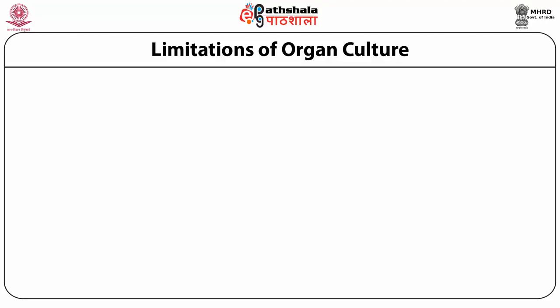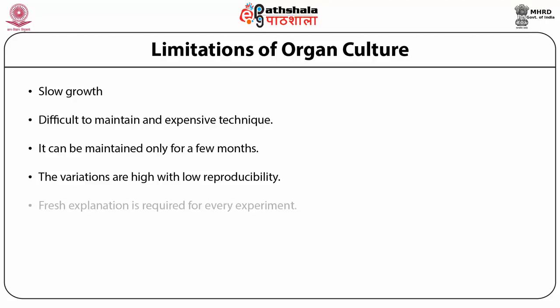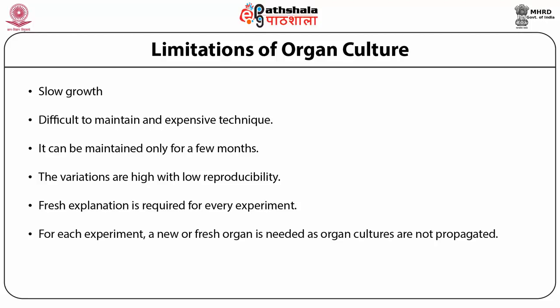Limitations and shortcomings of organ culture: there is very slow growth, and cell types vary. It is difficult to maintain and is a very expensive technique requiring extensive artificial media and environment. It can be maintained only for a few months. Variation is high but reproducibility is low. Fresh explantation is required for every experiment, making the technique much more expensive. For each experiment, a new fresh organ is needed as organ cultures are not propagated.